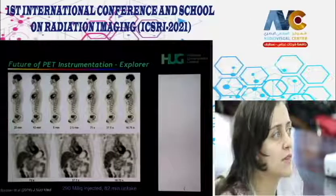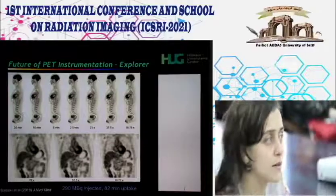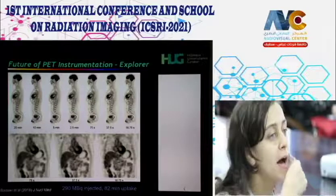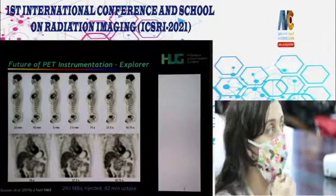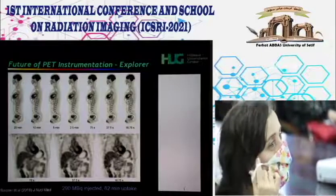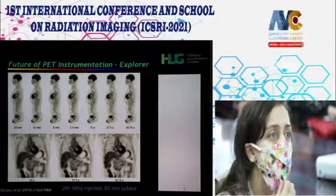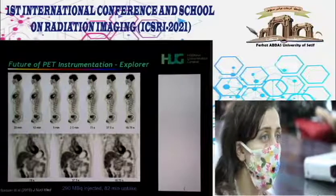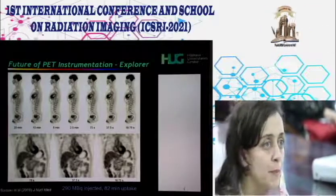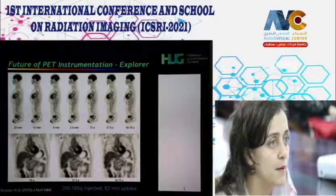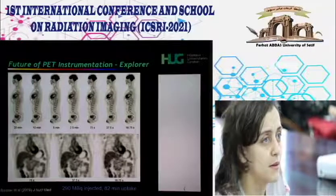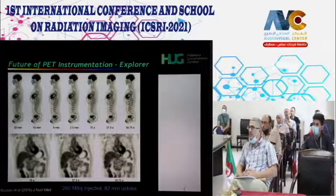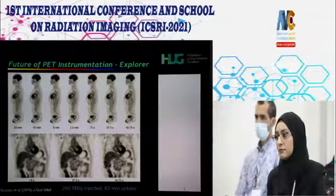Regarding FDG: F-18 is attached to deoxyglucose—the equivalent of sugar. The key difference is that regular glucose is later eliminated from cells, while deoxyglucose remains trapped within the cell, which is why we see increasing uptake over time. The radiation exposure issue will be addressed on a later slide.